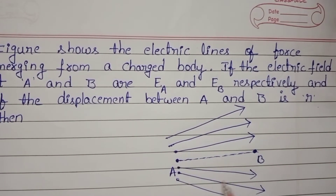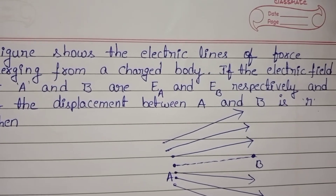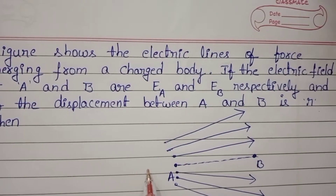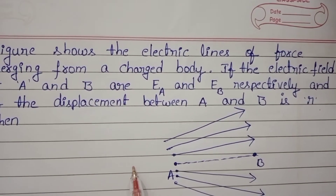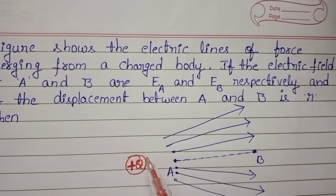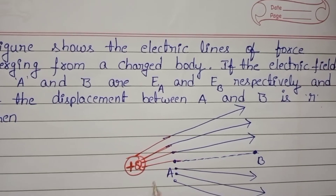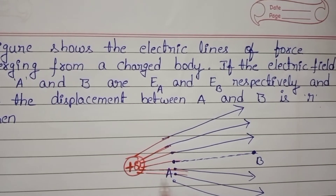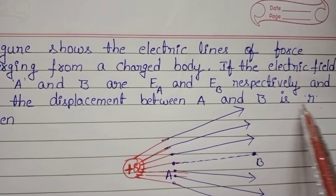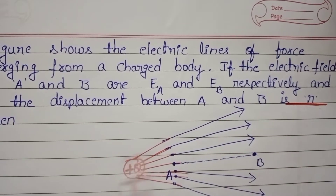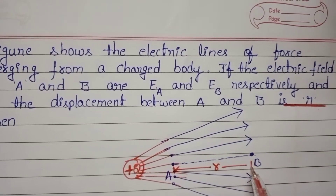Here, electric field lines are emerging from a charged body. In the case of a positive charge, the electric field lines are radially outward. Let us take charge Q with field lines radially outward. In the problem, the displacement between A and B is R, so this distance of separation is R.